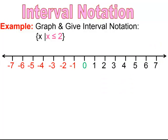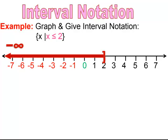This next example, we have x is less than or equal to 2. The difference between x is less than 2 and less than or equal to 2 is the bracket. We have a bracket at 2 to include it, and we're shading to the left, going off to negative infinity. When I write my interval notation, it's going to be parentheses negative infinity comma 2 with a bracket, because we're also including that 2. It's very important when you're writing your interval notation to use the right symbols.